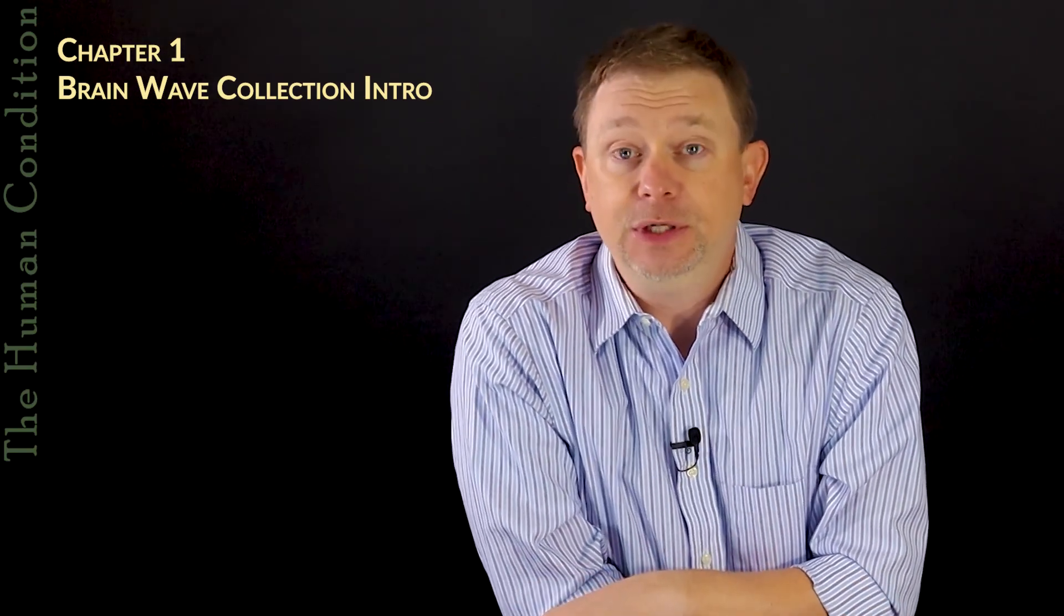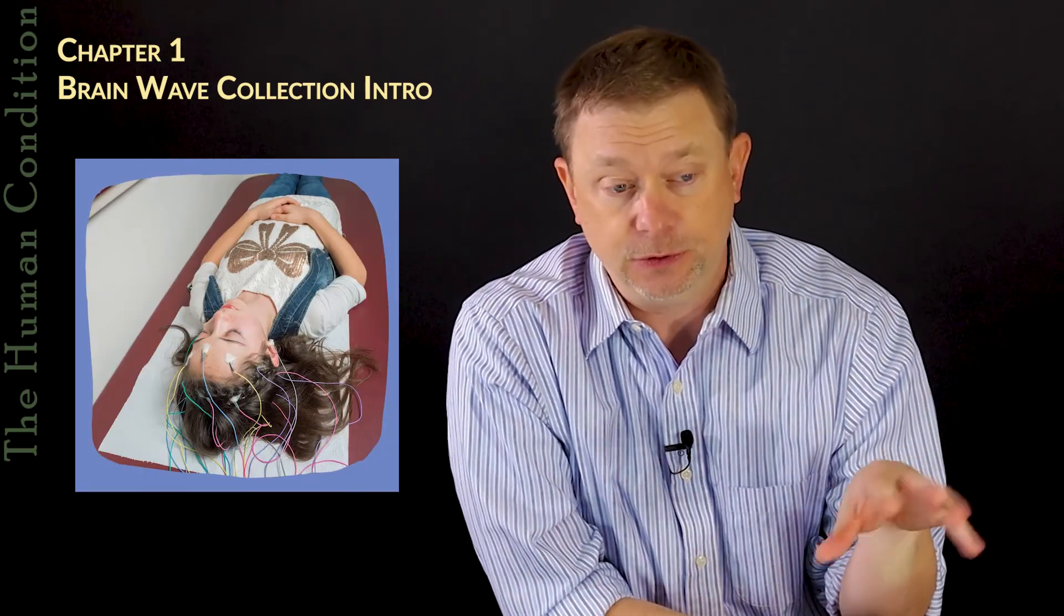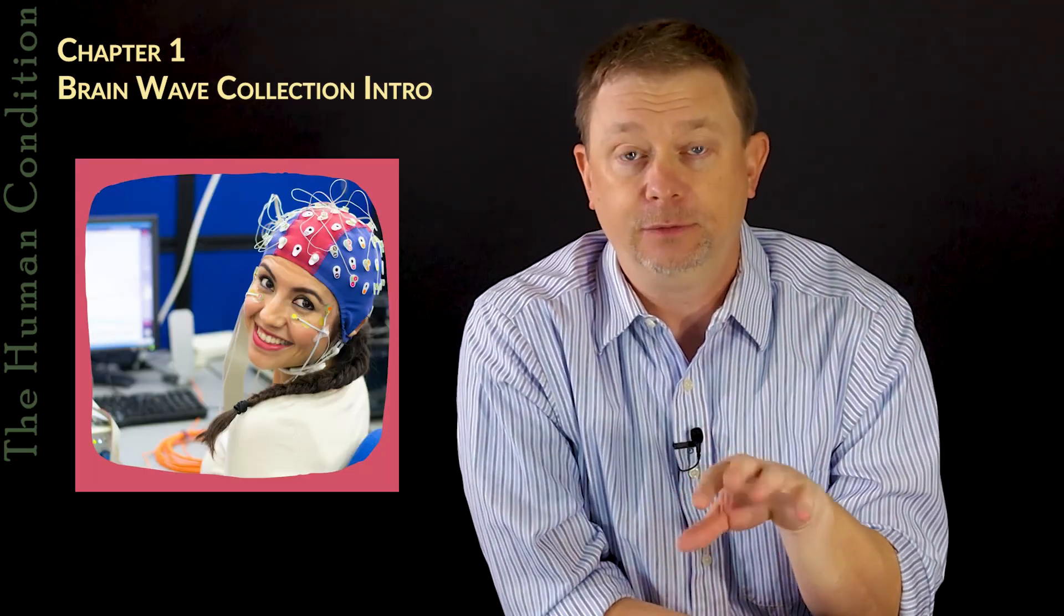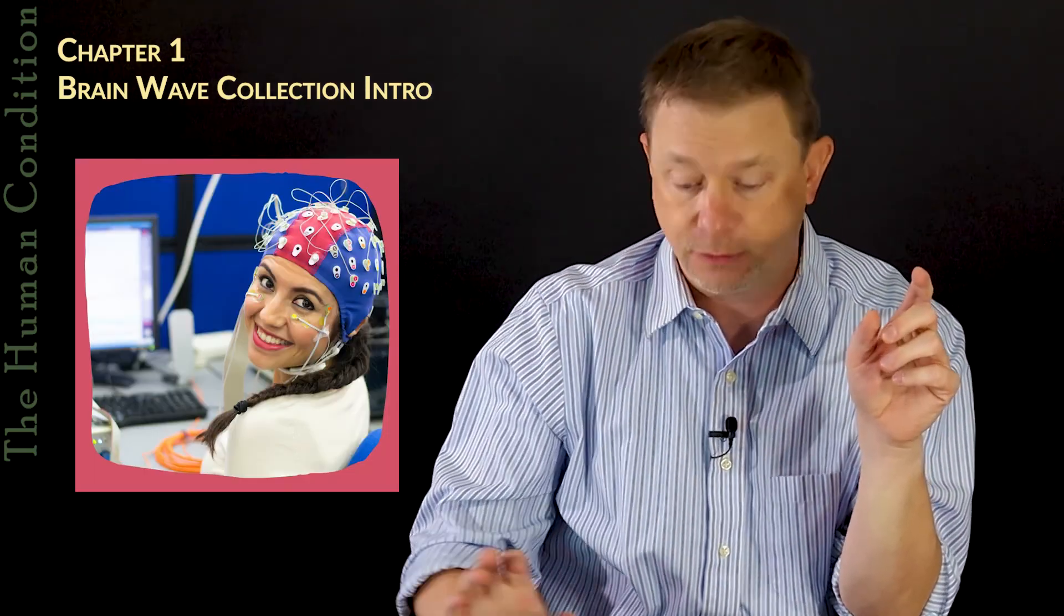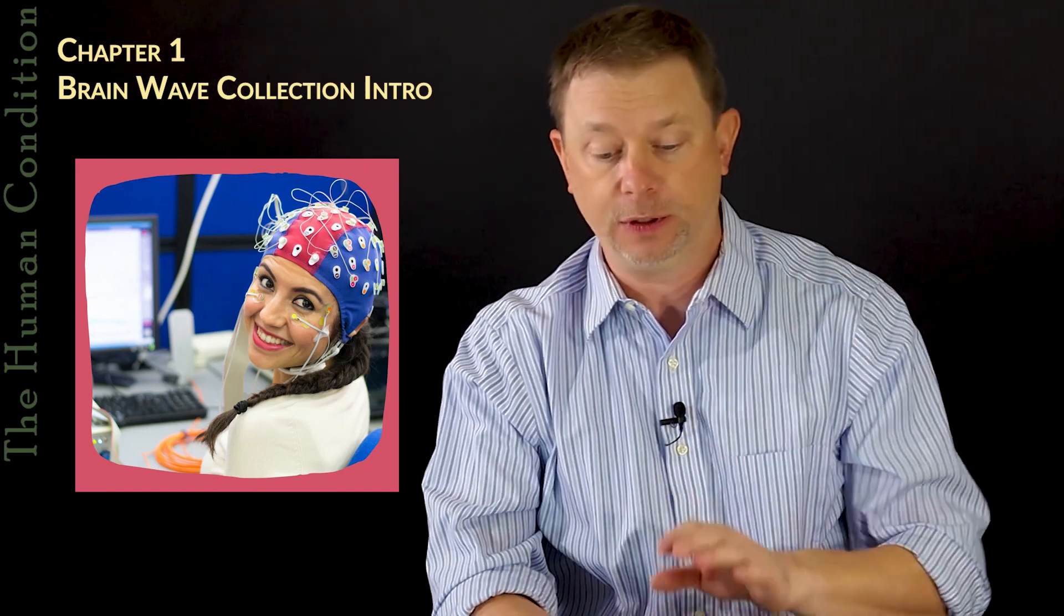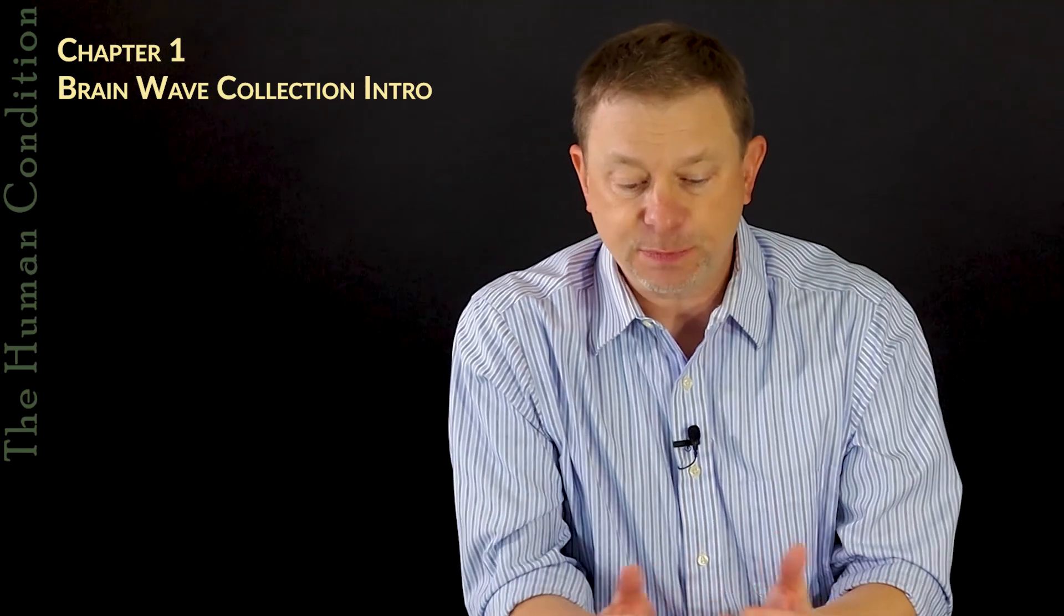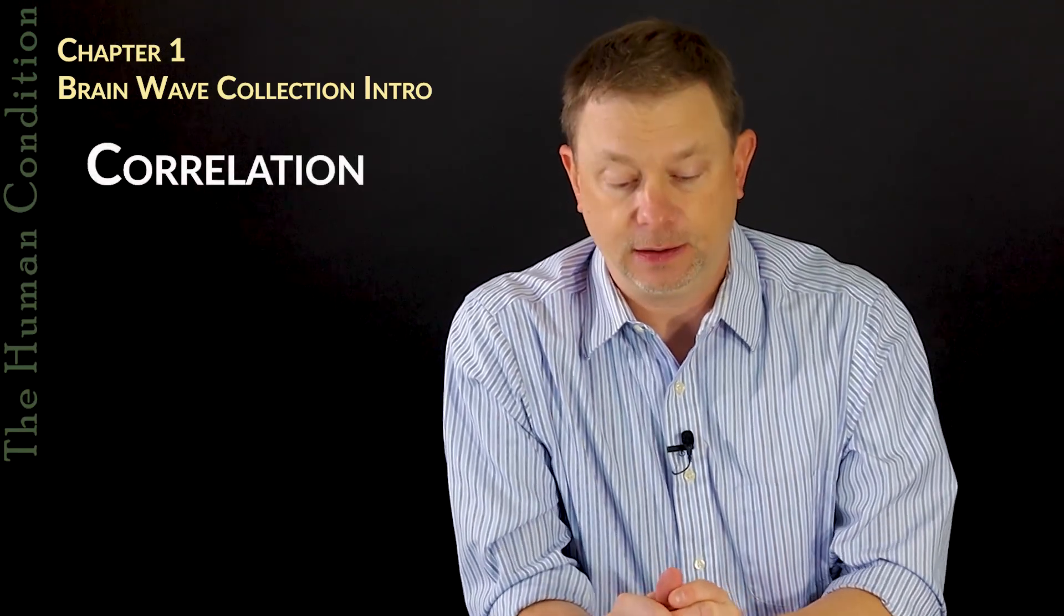The difference between EEG and ERP is EEG is passive—it's usually a person not doing anything—and ERP is usually active where a person is clicking a mouse or pressing a space bar on a keyboard. They're doing something in response to a stimulus. We need to explain the difference between correlation and causation.